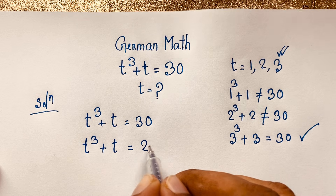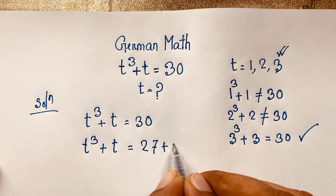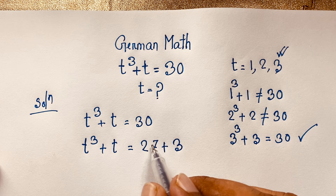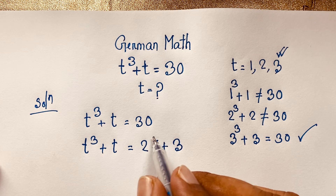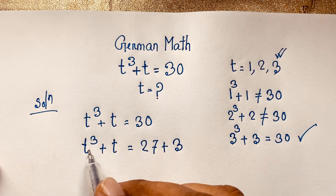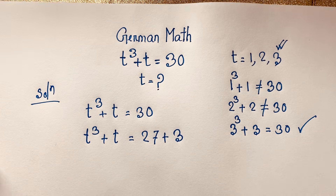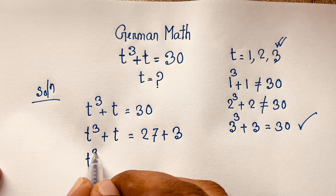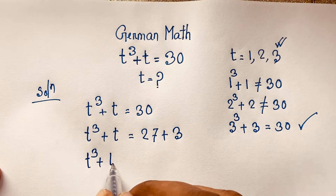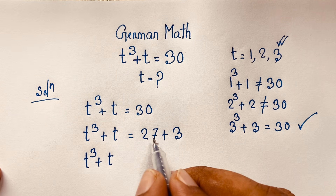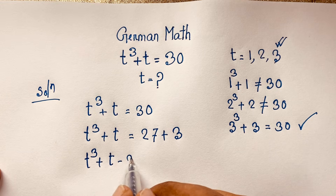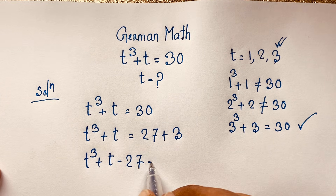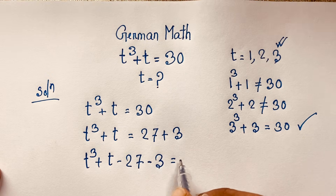You can see t to the power 3 plus t, and 30 can be written as 27 plus 3, because 3 to the power 3 is 27. We are applying the math formula a cubed minus b cubed. So this is t to the power 3 plus t, and if we move 27 to this side it becomes minus 27, giving t³ + t - 27 - 3 = 0.